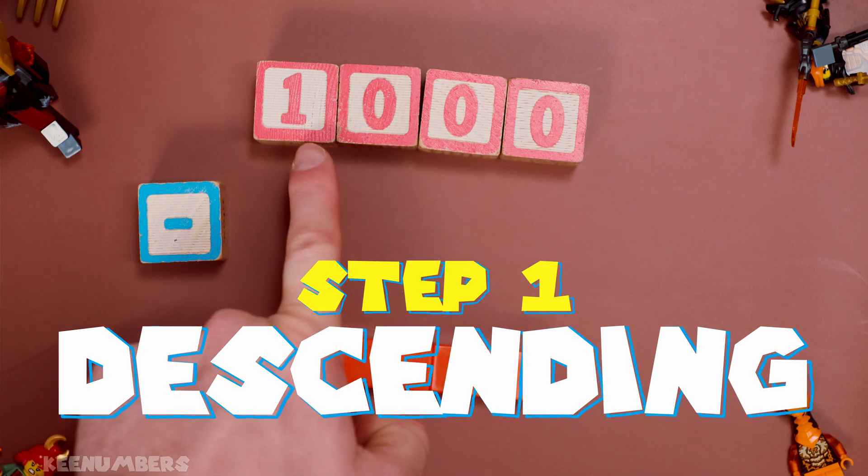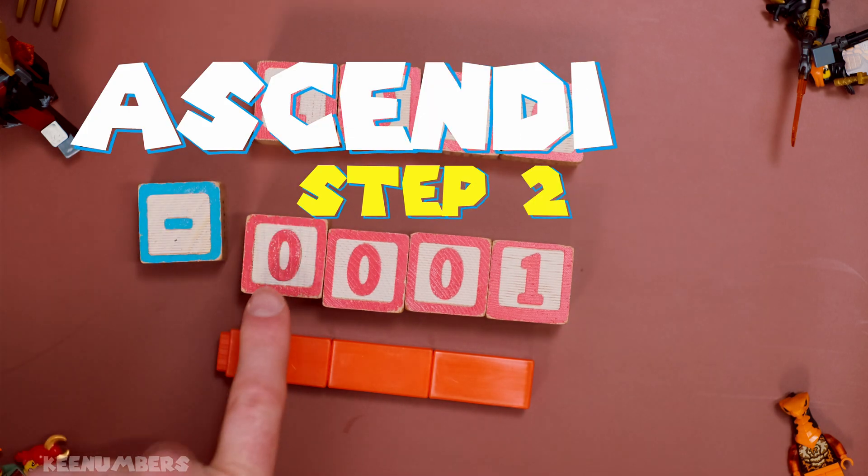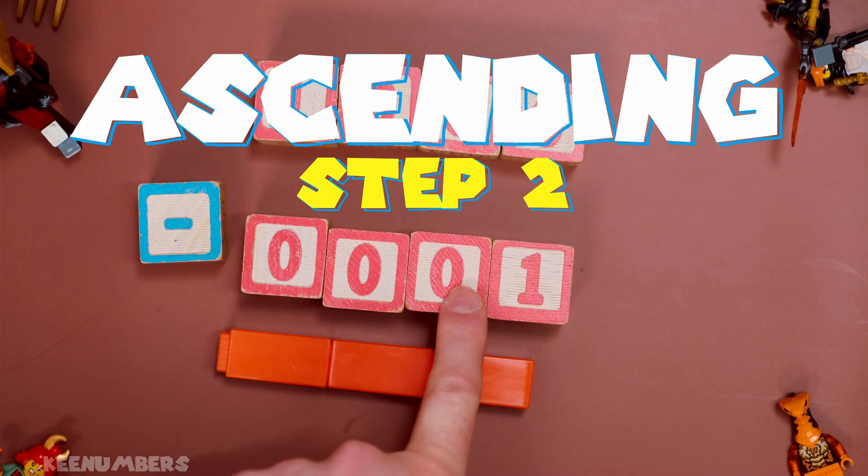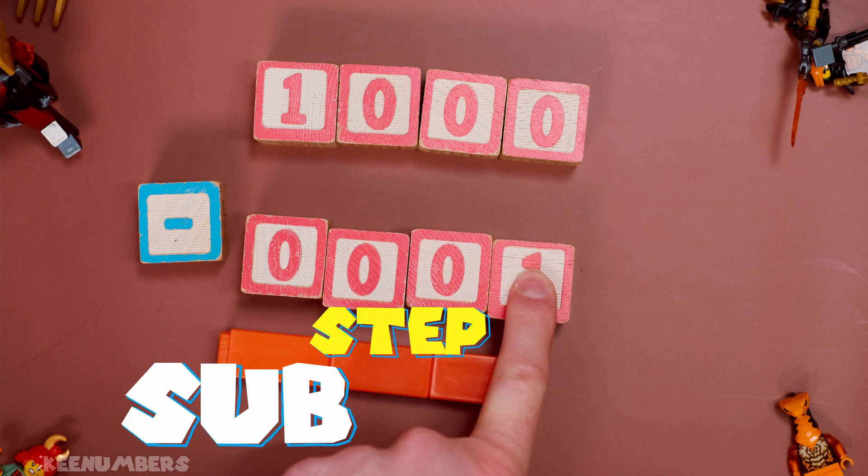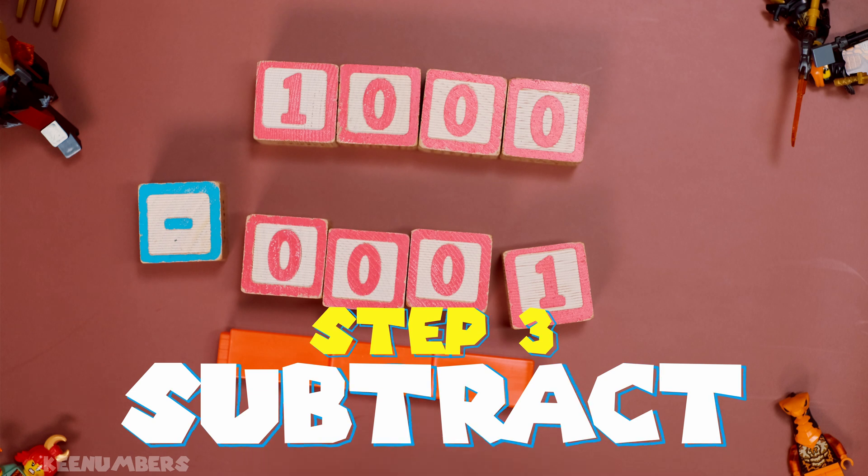Let's rearrange this. It's already in descending order. That's good. What about subtracting the number in ascending order? Well, zero, zero, zero becomes your first three numbers. And then one. That's the biggest number. So this is easy. 1000 minus one. Okay. You can do that.